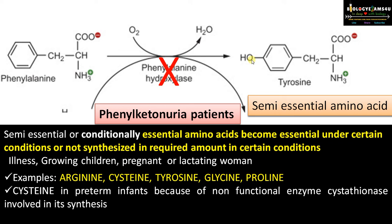Another example is cysteine in preterm infants. The enzyme responsible is non-functional in preterm infants, therefore cysteine is a semi-essential amino acid in the case of preterm infants.